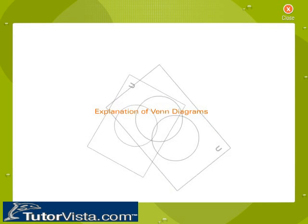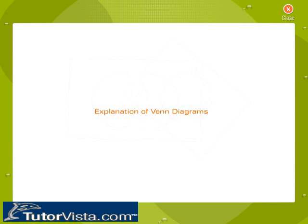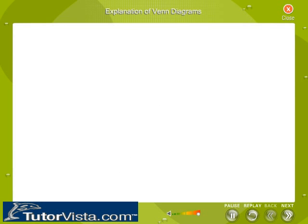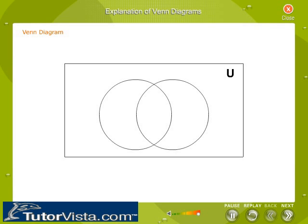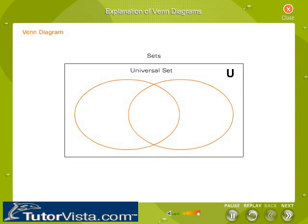This is an explanation of Venn diagrams. A Venn diagram is a visual representation of sets. We have learned about the union of sets and the intersection of sets, which can be diagrammatically represented using a rectangle and circles or ellipses. The rectangle represents the universal set, while circles or ellipses represent the subsets of the universal set.